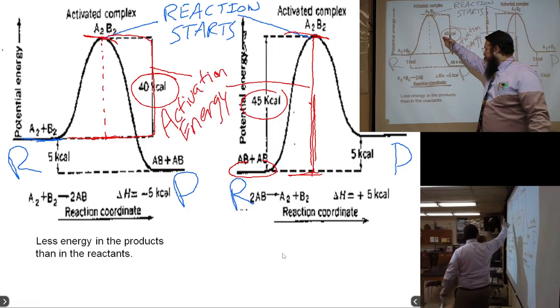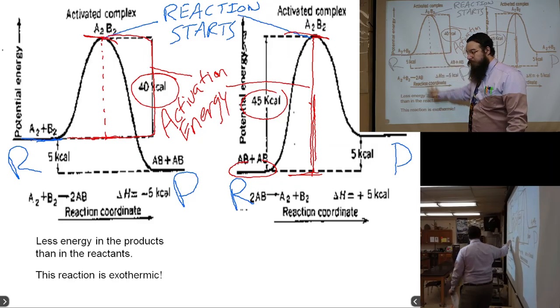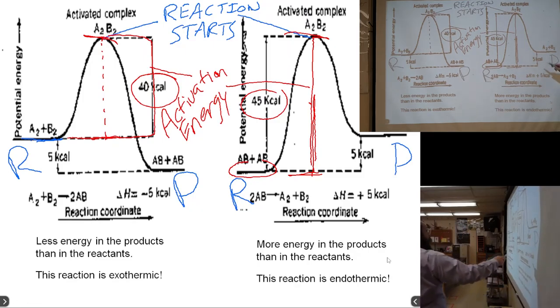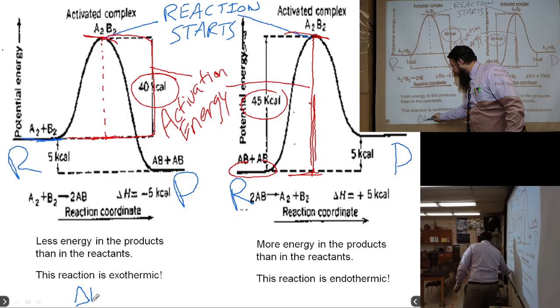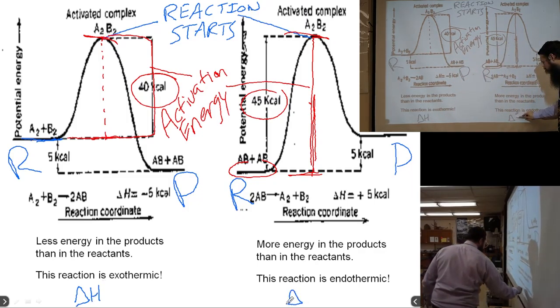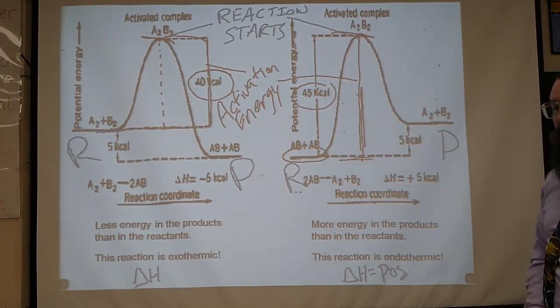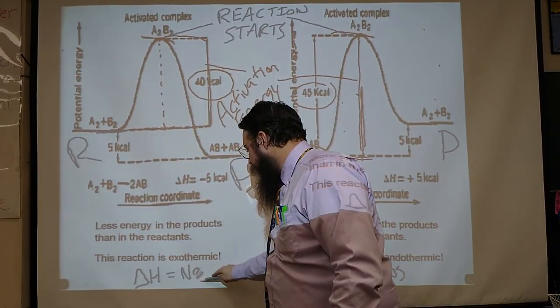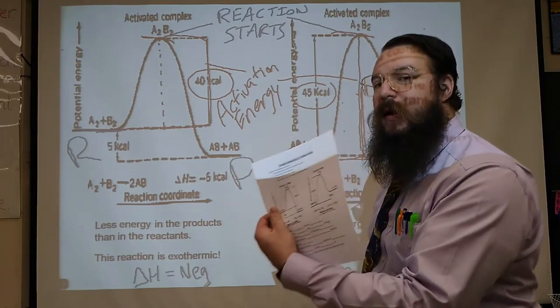You will of course notice again that you've got less energy here in the products than you had in the reactants. So this is an exothermic reaction. Make sure you label this one on the left of your notes as an exothermic reaction. Label this one over here because there's more energy in the products than we started with, this is an endothermic reaction. Keep in mind that if we are looking at delta H, the change in thermal energy here, we have an increase. So delta H will be a positive number of some kind. And over here, because we're going down, we have less energy. Delta H is going to be a negative number of some kind. Make sure you should have all four of those labeled on the notes right here, right now.